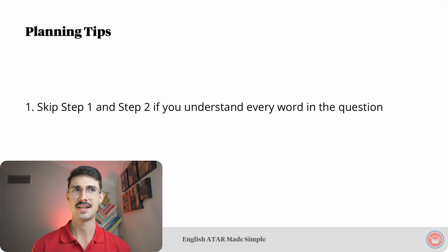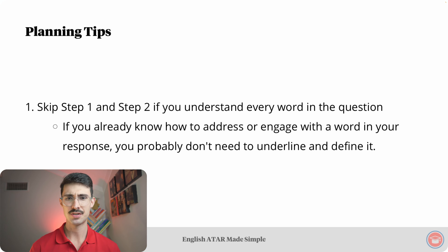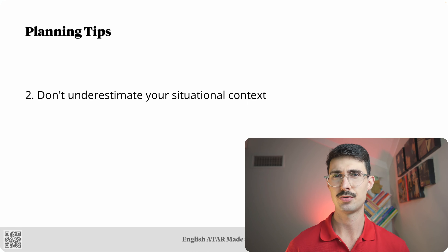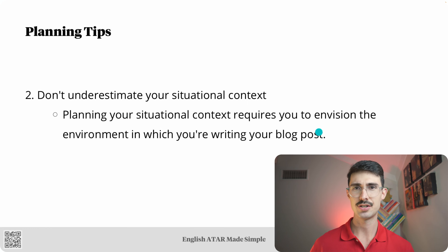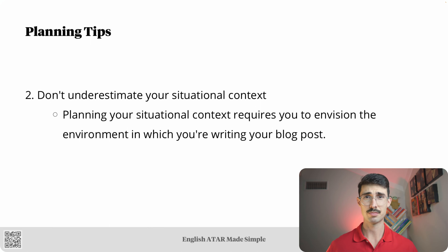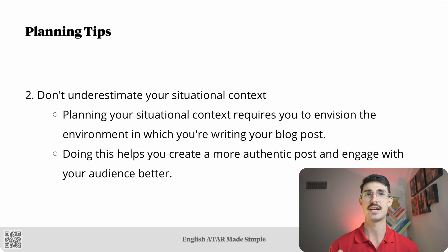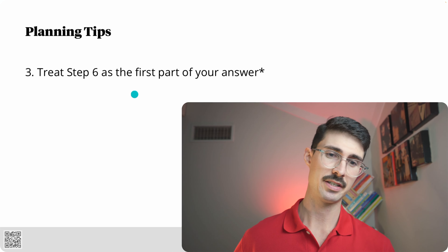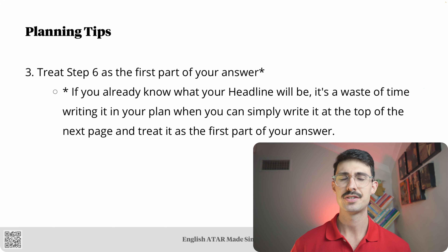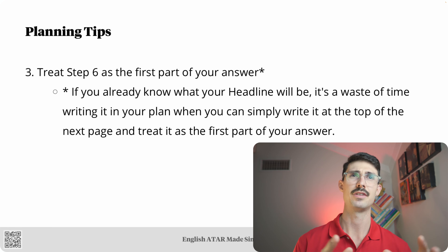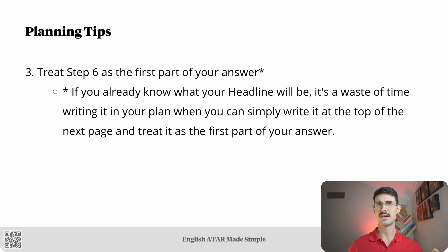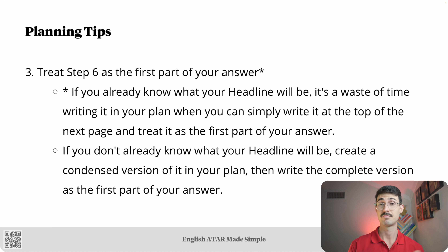After this section of the lesson, we discussed some planning tips. Tip one: skip steps one and two if you understand every word in the question — if you already know how to address or engage with a word in your response, you probably don't need to underline and define it. Every second counts. Tip two: don't underestimate your situational context — planning your situational context requires you to envision the environment in which you are writing your blog post, which helps you create a more authentic post and engage with your audience better. Tip three: treat step six as the first part of your answer — if you already know your headline, write it at the top of the next page; if not, create a condensed version in your plan and write the complete version as the first part of your answer.